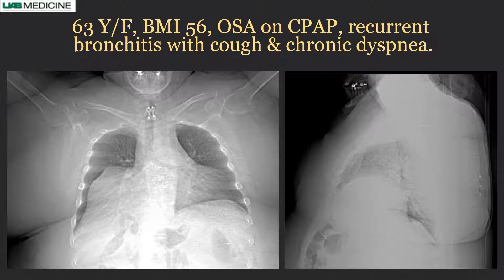This is a typical Alabama patient with a BMI of 56, obstructive sleep apnea, recurrent bronchitis, cough, tonic dyspnea, and a very elevated right hemidiaphragm. On the lateral scout CT image, the anterior portion of the diaphragm is elevated, not the posterior portion. This is likely eventration, not paralysis — paralysis does not cause focal elevation; it is uniform.